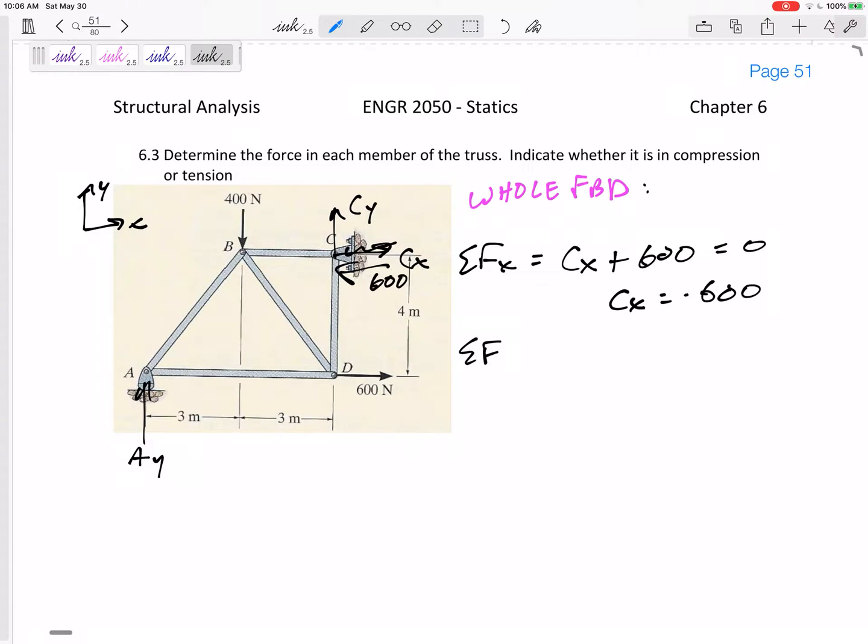Summing the forces in the Y direction: Ay minus 400 plus Cy, that has two unknowns. So let me jump to summing the moments, probably want to sum the moments about C. Let me slow down here and sum the moments about C.